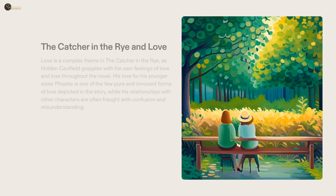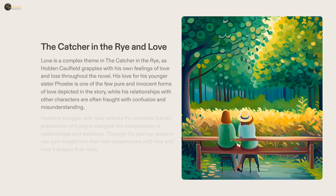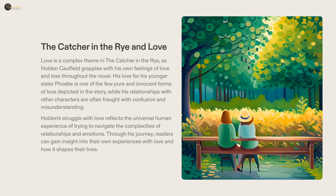Holden Caulfield is on a journey to understand love and relationships, his most authentic connection being with his sister Phoebe, which shows how strong and meaningful love can be. His other relationships are a mixture of understanding and confusion. Through his voyage, readers can gain wisdom about their own experiences of love and how it shapes their lives.